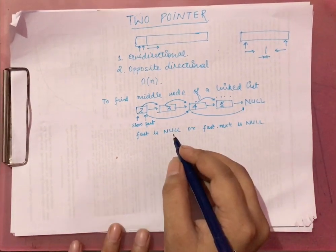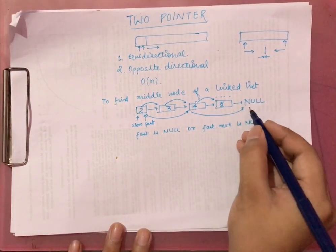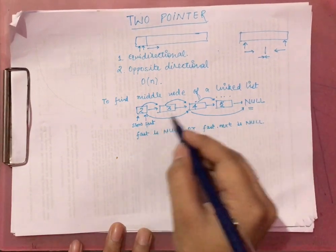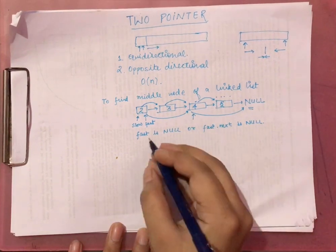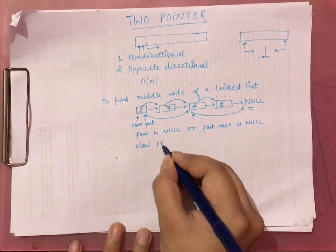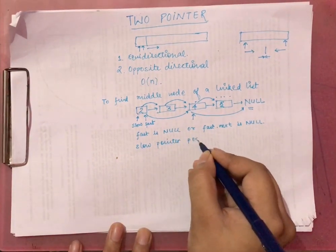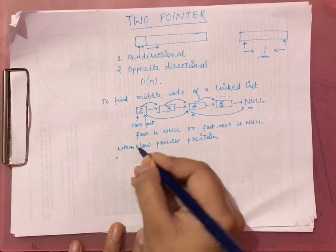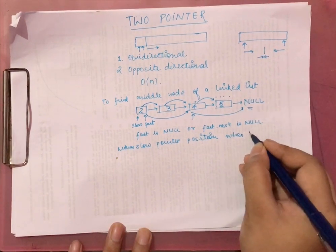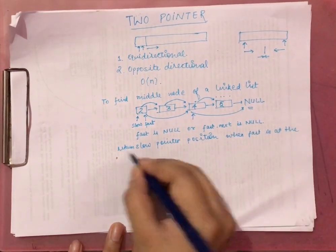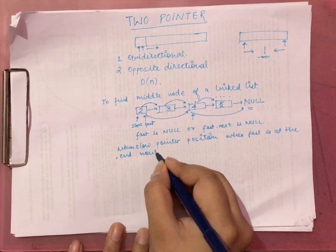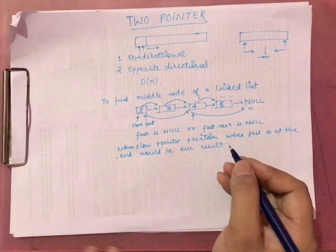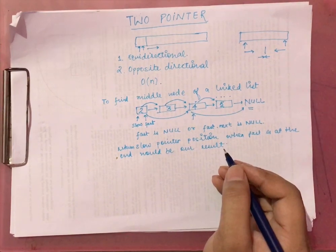When the fast pointer reaches the end of the linked list, the slow pointer will be exactly at the middle. So we return the slow pointer's position when fast reaches the end — that is our result.